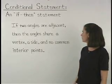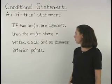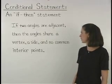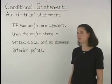If two angles are adjacent, then the angles share a vertex, a side, and no common interior points.